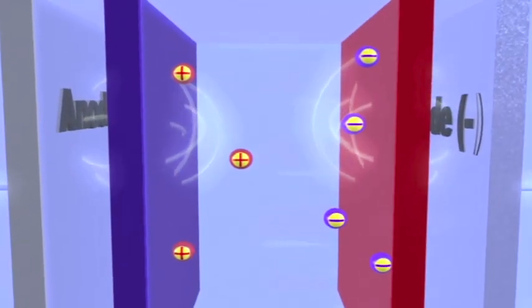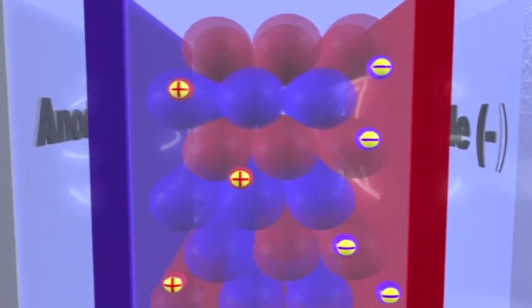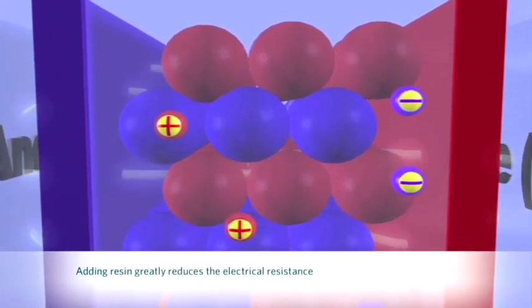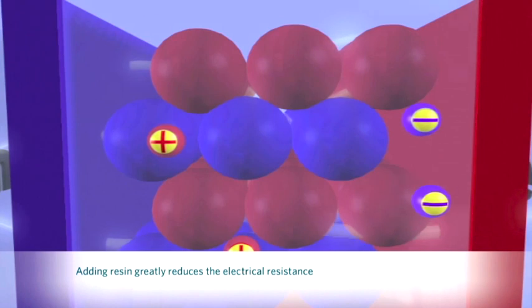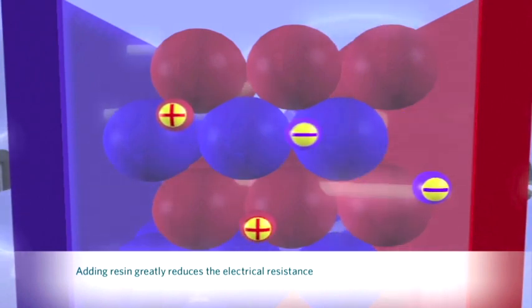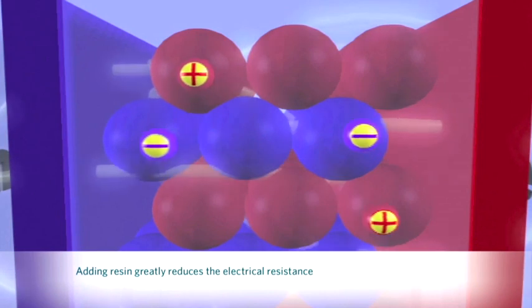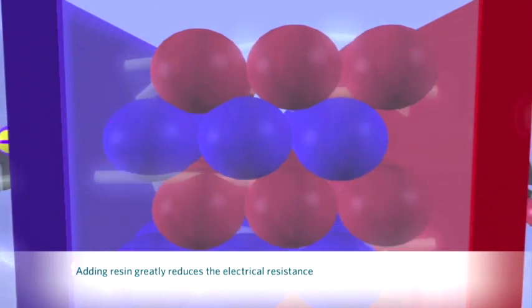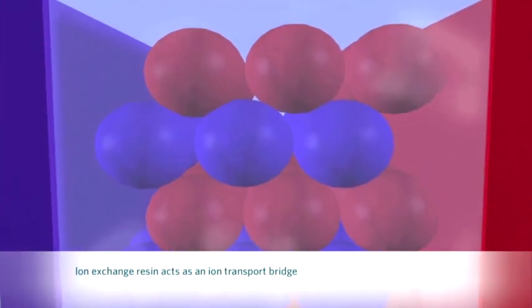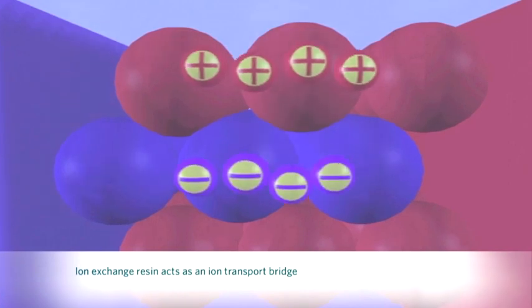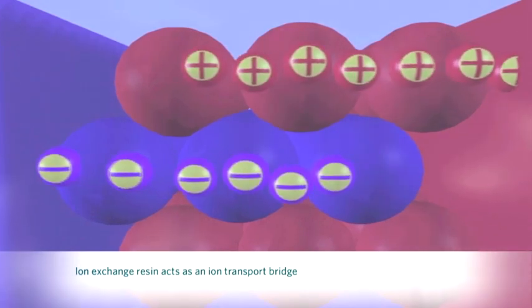IonPure CEDI technology solves this problem by sandwiching a mixture of cation and anion-selective resins between the two membranes. The large surface area now offered by the resin beads effectively eliminates the ion diffusion resistance and allows the ions to move freely, even in ultra-pure water solution. The surface of the resin beads acts as a conductive path, effectively acting as a bridge for the ions to move quicker toward the membrane surface, faster than if they were in water alone.